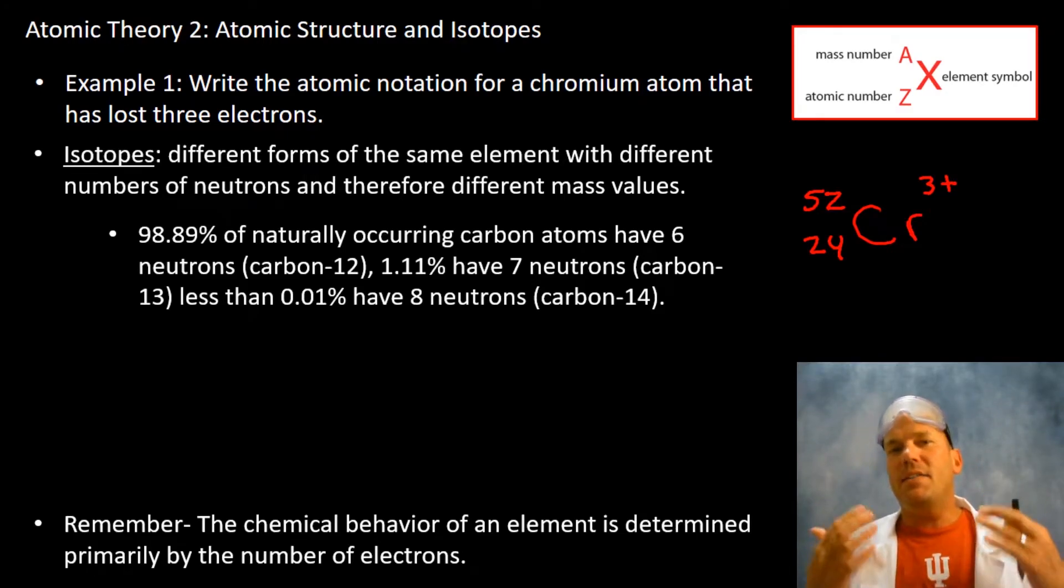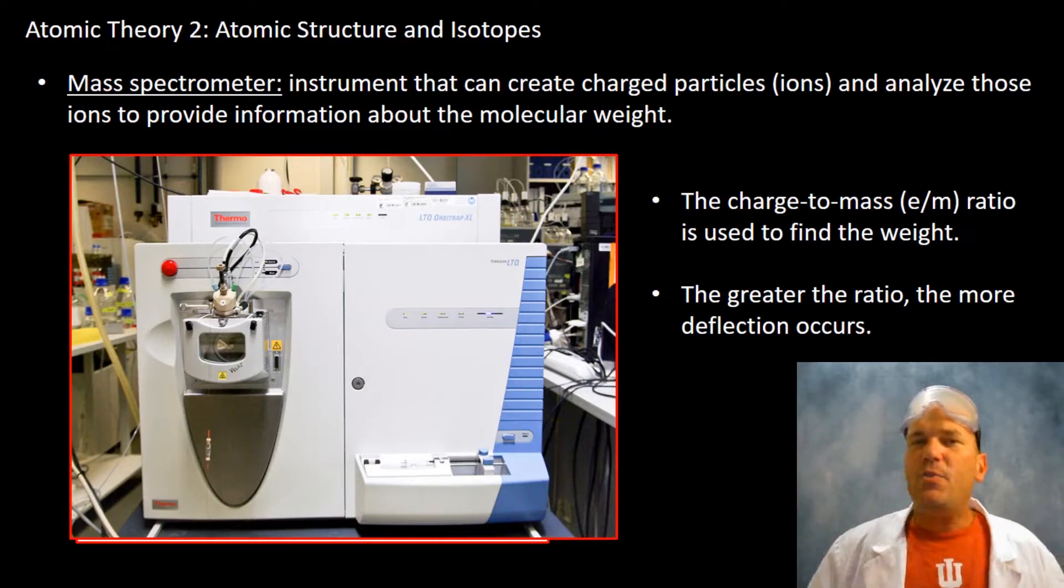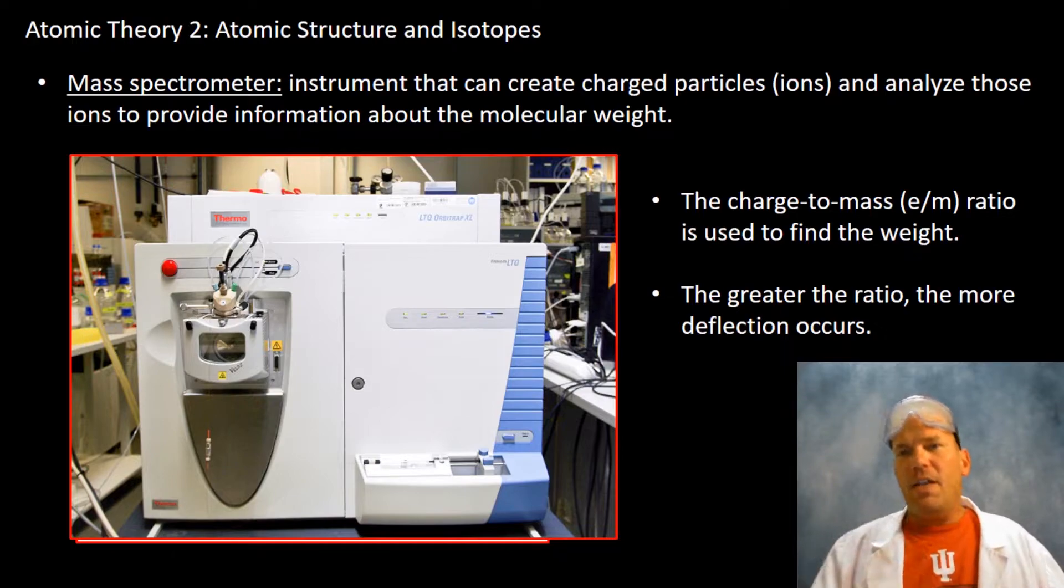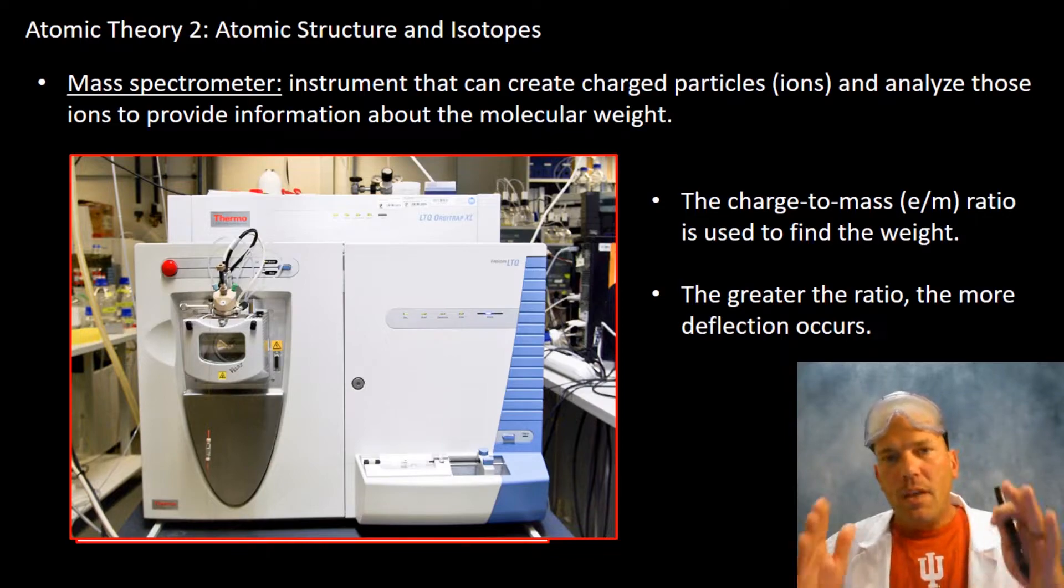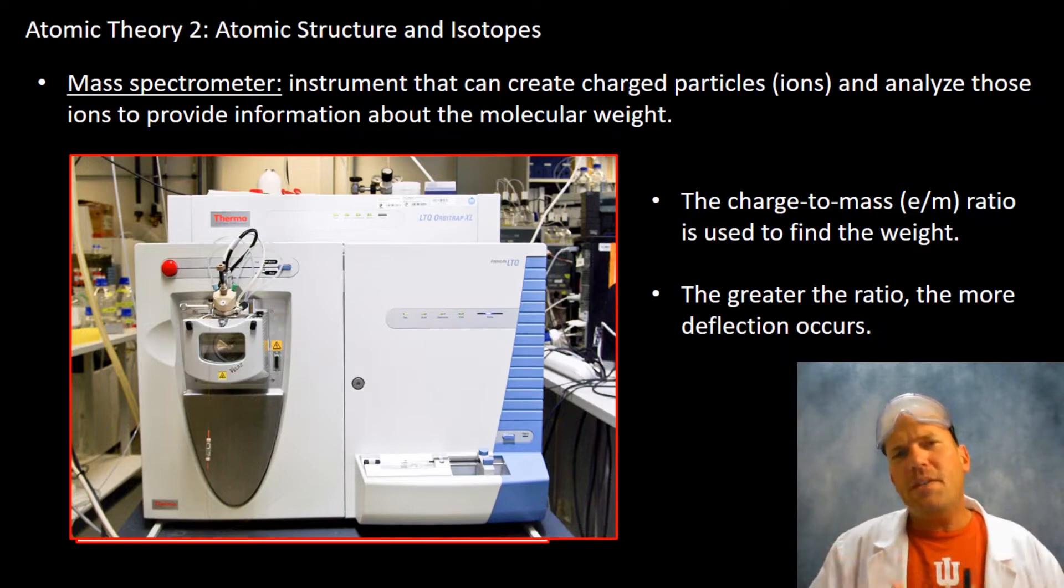I want you to also remember that the behavior of a chemical species is determined by its electrons. So a mass spectrometer is an instrument that can create charged particles and can analyze these particles based on a deflection and a mass-charge ratio. What's amazing about these machines is they can be used to determine the molecular weight.